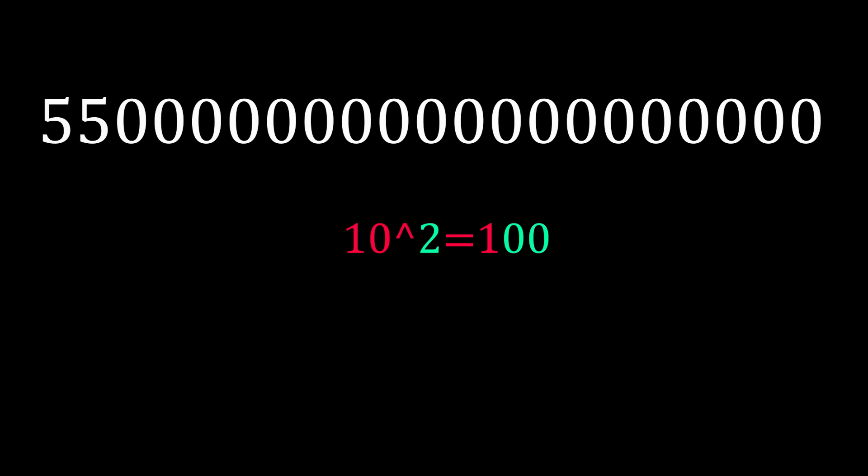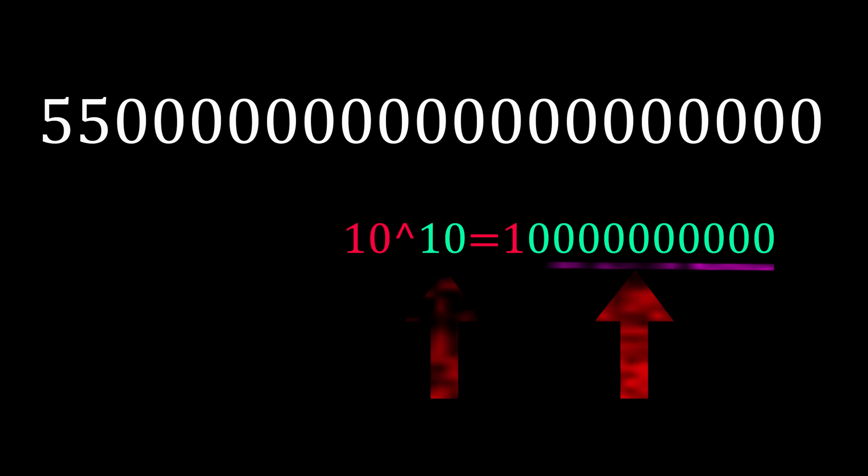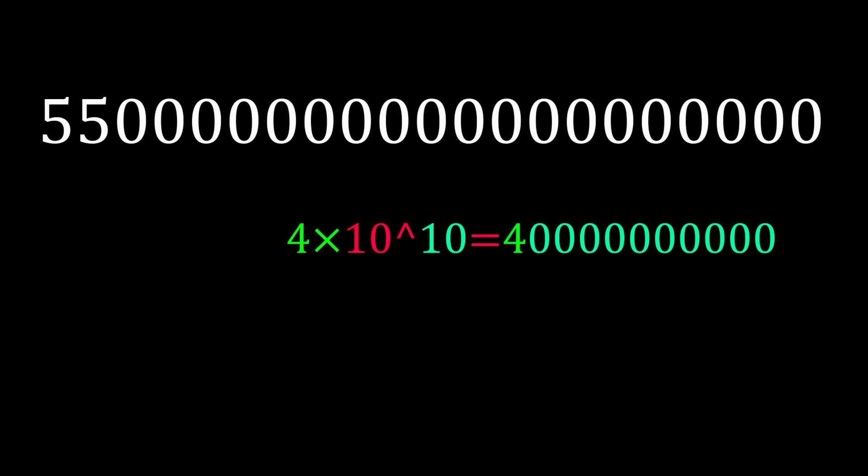Now notice that if we raise a number to 10, we are just increasing the zeros after 1. So the number of exponents is equal to the number of zeros. Lastly, notice that if we multiply any non-1 number with this, we just replace the 1.